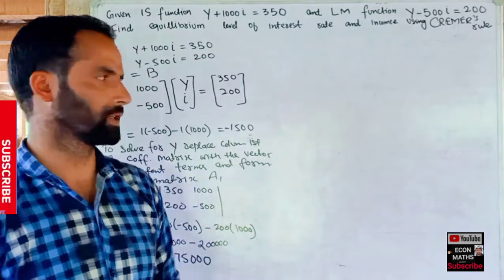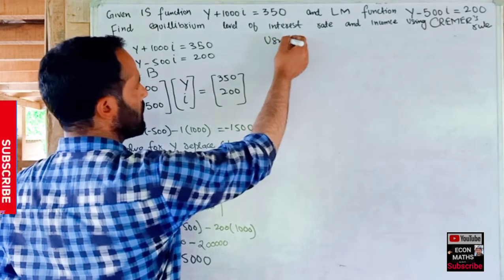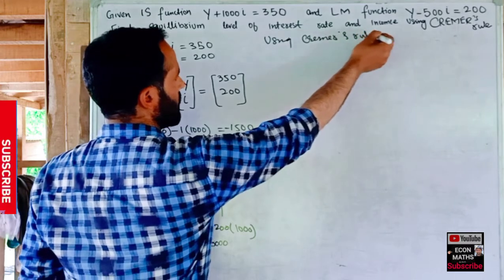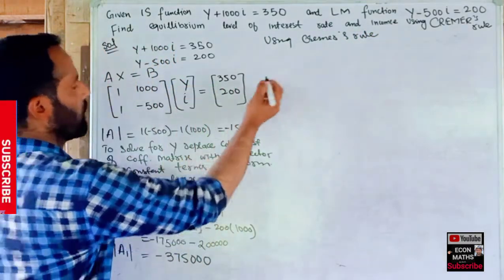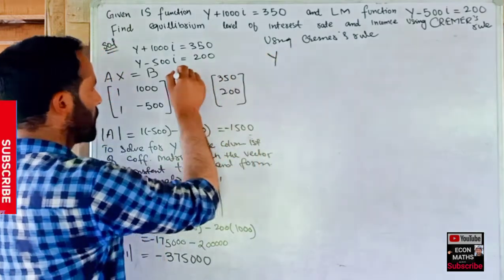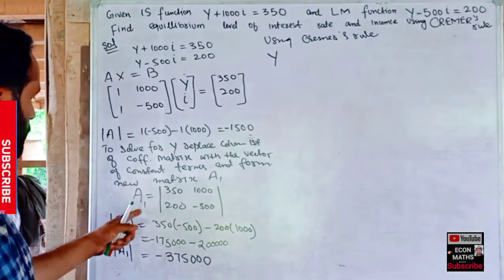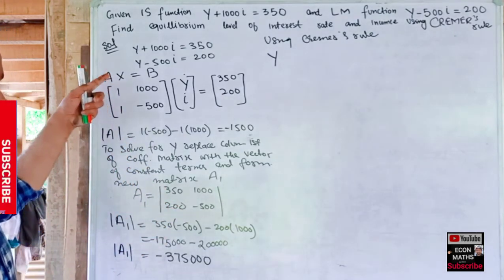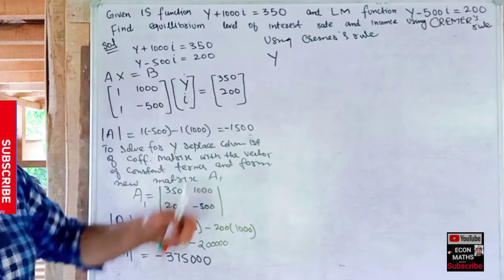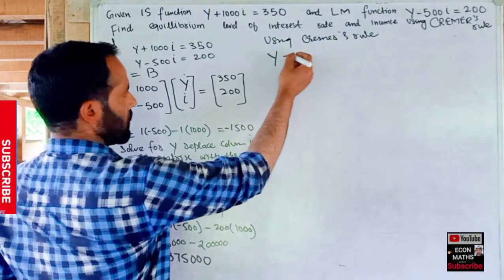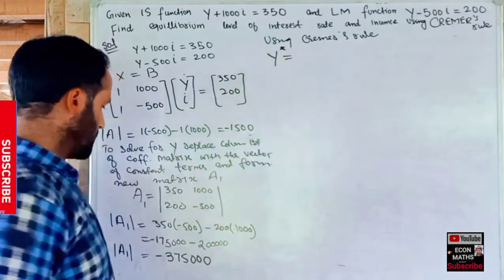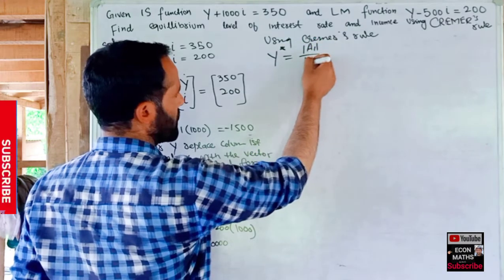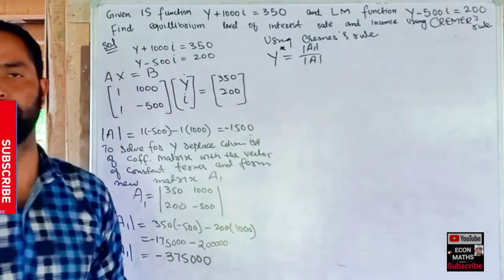Now we apply Cramer's rule. Using Cramer's rule, the value of Y equals the determinant of the new matrix A1 divided by the determinant of the coefficient matrix. That is Y = det(A1) / det(A) = −375,000 / −1500.